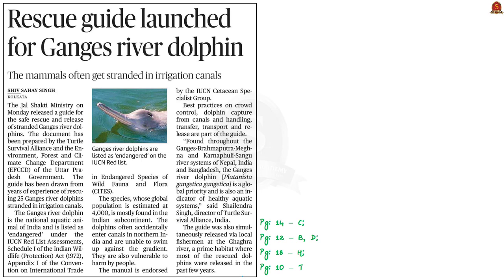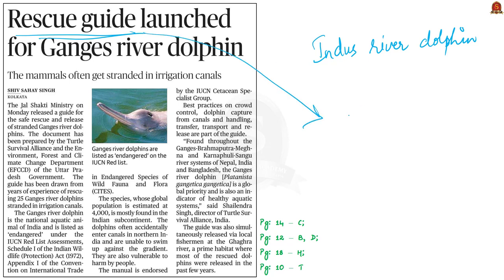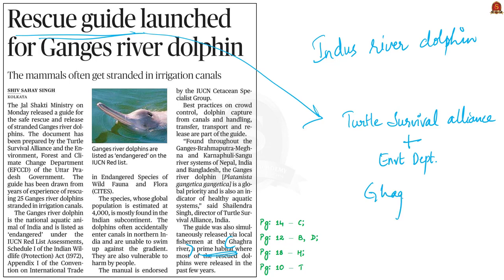The next discussion is based on a news article about the Gangetic River Dolphin. A rescue guide has been launched for the Gangetic River Dolphin to help in safe rescue and relief of stranded Ganges River Dolphins, as these dolphins often get stranded in irrigation canals. This guide was prepared by the Turtle Survival Alliance along with the Environment Department of the Uttar Pradesh government and is endorsed by the IUCN. Rescued dolphins have been released in the Ghaghra river, which has become a prime habitat for this species.